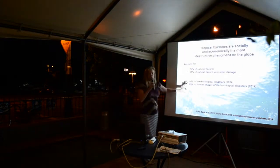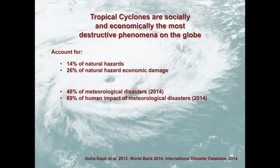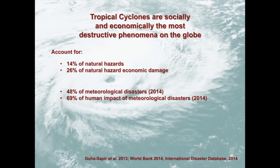The first point I want to make is that tropical cyclones — of which hurricanes are a subset — are socially and economically the most destructive natural phenomena on Earth. This includes earthquakes, volcanoes, and any other natural disaster you can think of. They account for 14% of the hazards but 26% of the economic damage, based on data up to 2014 from the World Bank and the International Disaster Database. They account for almost 50% of all weather disasters but almost 70% of the human impact of those disasters. So it is really important to understand them.